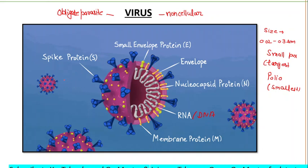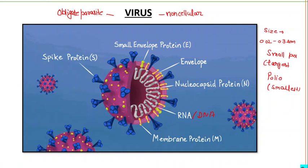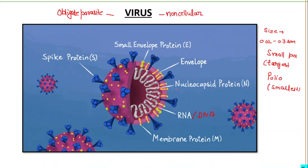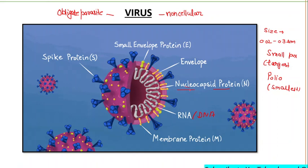Let's talk about viral structure. Different virions have different structures, but they all have a nucleocapsid — meaning nucleic acid enclosed in a capsule. The nucleocapsid protects the viral genome from nucleases, and during infection it attaches the virion to specific receptors on the prospective host cell.